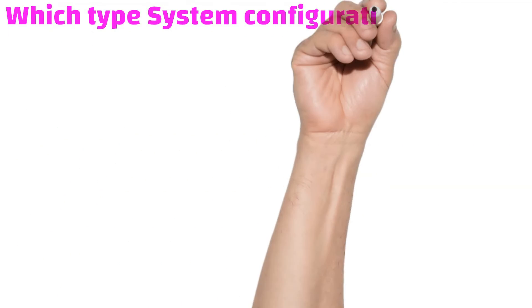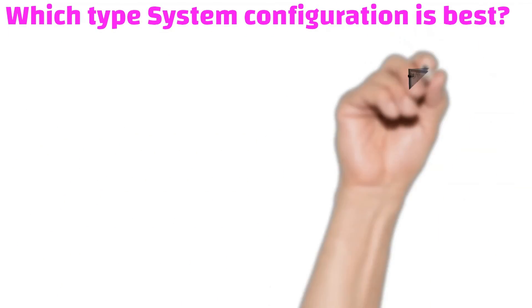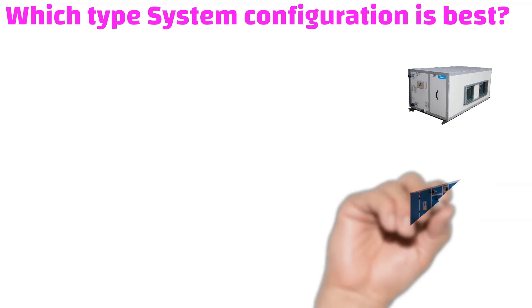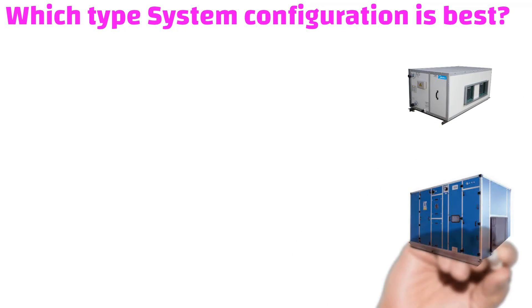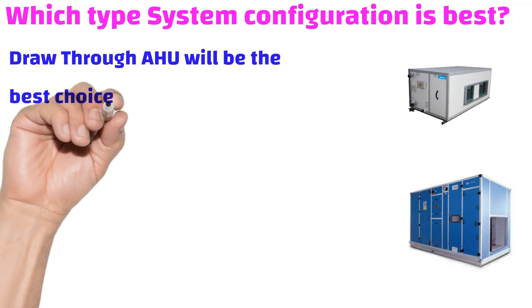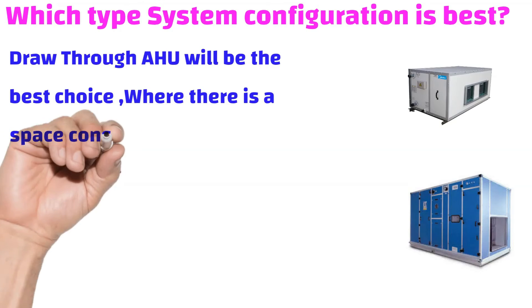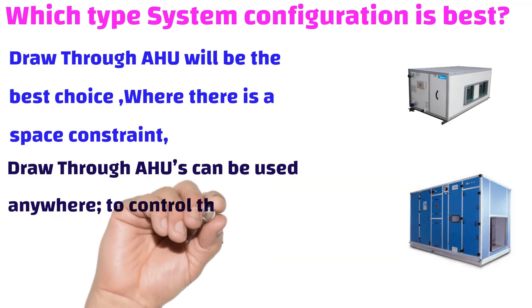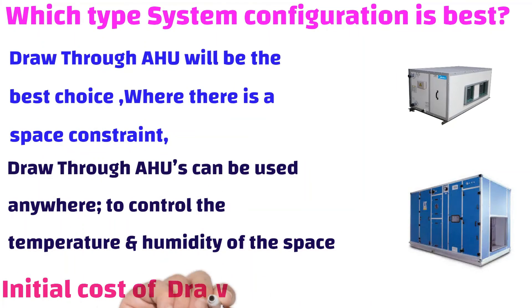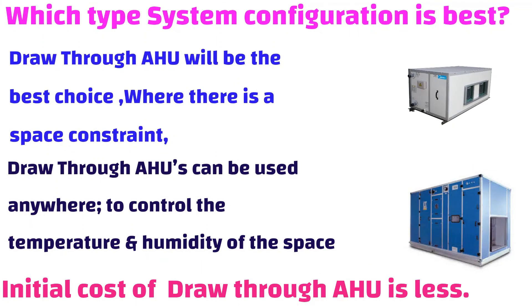Which type of system configuration is best? Draw through AHU will be the best choice where there is a space constraint. Draw through AHUs can be used anywhere to control the temperature and humidity of the space, and the initial cost of a draw through AHU is less.